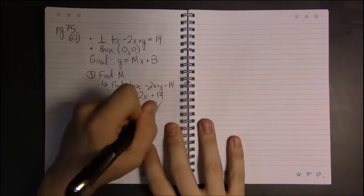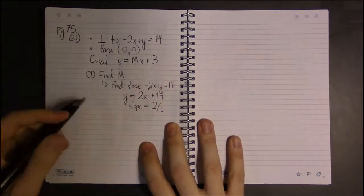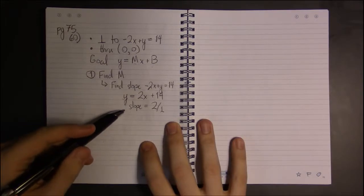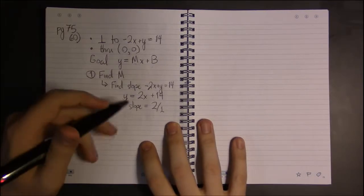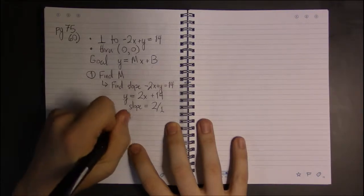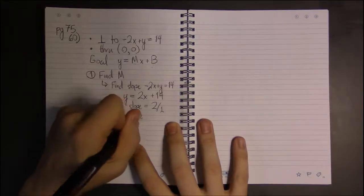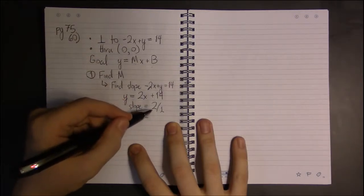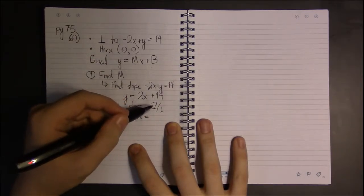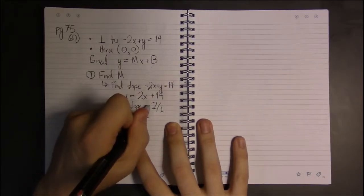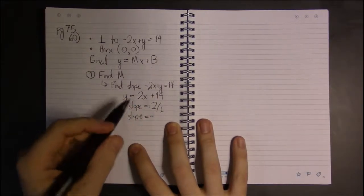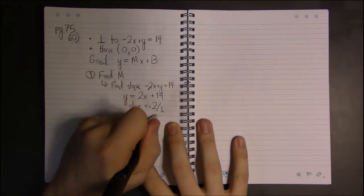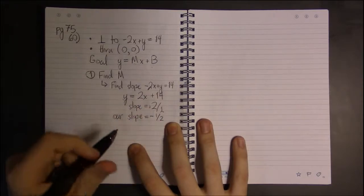Or, since we're going to need this to be in a fraction, 2 over 1, because we can always put anything over 1. Dividing by 1 never changes anything. So our slope, since perpendicular lines have opposite reciprocals, we change the sign of this from positive to negative, and the reciprocal tells us to flip the fraction. So 1 on top, 2 on bottom.